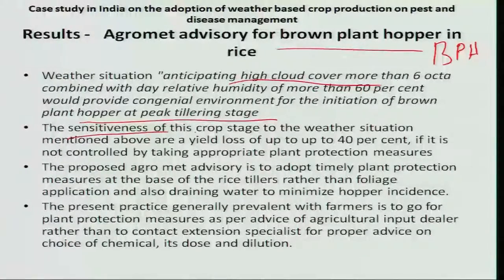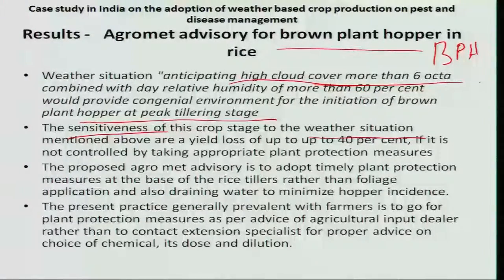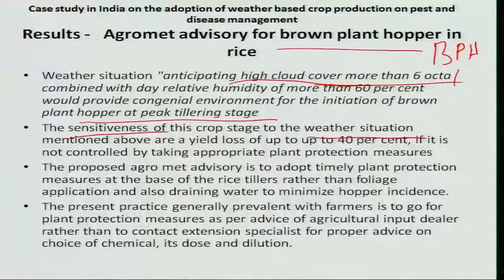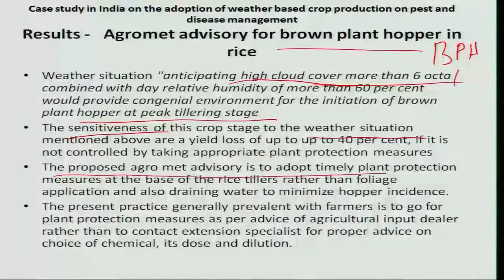Based on the sensitivity of the crop stage to this weather situation, the triggering condition is cloud cover more than 6 octas. In earlier classes, we saw that cloud cover is measured on a scale from 0 to 8 octas. At 6 octas, the Brown Plant Hopper multiplies and stays at the bottom of the tillers, sucking the sap and causing damage. The advisory is timely plant protection and providing drainage so that water does not create a congenial atmosphere for the insect at the base of the plant.